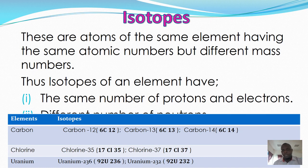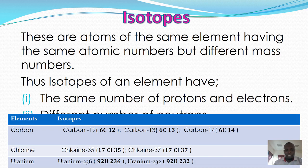We can define isotopes as atoms of the same element with the same atomic number but different mass number. Isotopes have the same number of protons but will always have different numbers of neutrons. Examples include carbon-12, carbon-13, and carbon-14, which are all isotopes of carbon. Chlorine has isotopes chlorine-35 and chlorine-37, and uranium has isotopes uranium-236 and uranium-232.